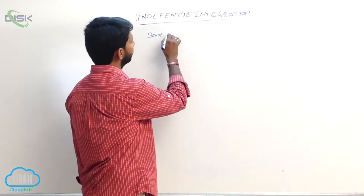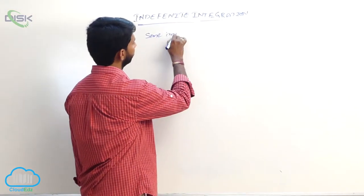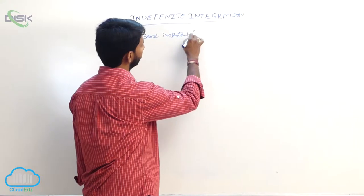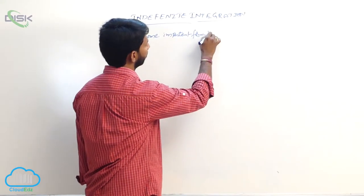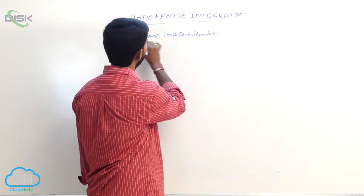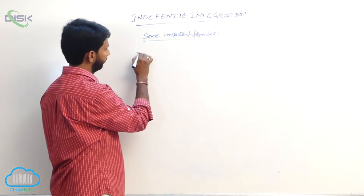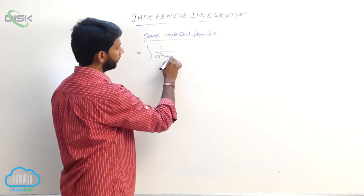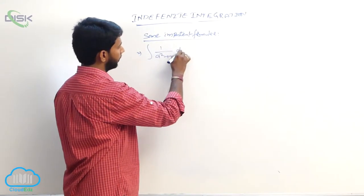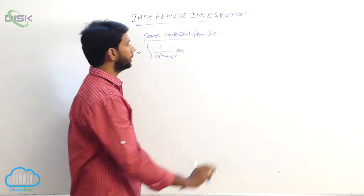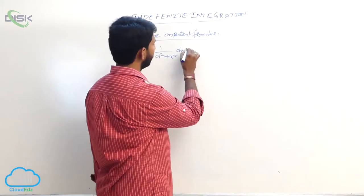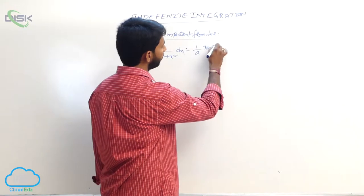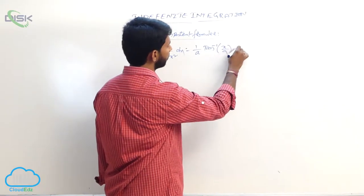Some important formulas. The first one is integral of 1 by a square plus x square dx, which is equal to 1 by a into tan inverse of x by a plus some constant.